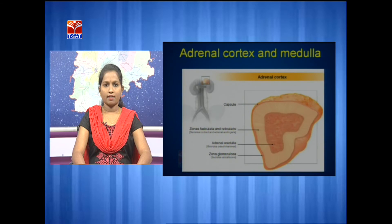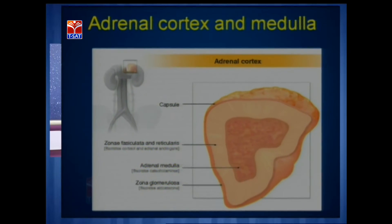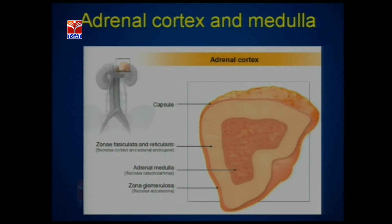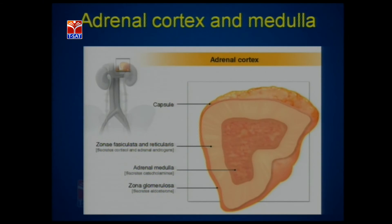Here is a diagram where you can see the kidneys with the adrenal glands present above them. This is the transverse section of the adrenal gland, where the first layer is the adrenal cortex with zona glomerulosa, then zona fasciculata and zona reticularis, and the innermost region is the adrenal medulla.